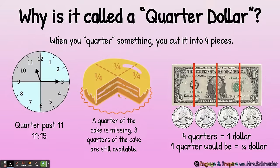Why is it called a quarter dollar? When you quarter something, you cut it into four pieces. So a clock is quartered — this clock shows eleven fifteen, one quarter past eleven. This cake is cut into quarters, and there's one quarter missing with three quarters still available. A dollar is cut into four, so twenty-five cents plus twenty-five cents plus twenty-five cents plus twenty-five cents is one hundred cents, which is one dollar.